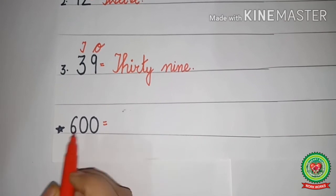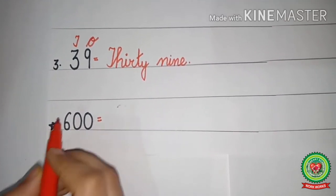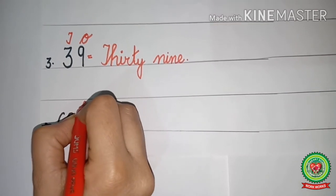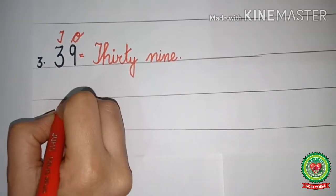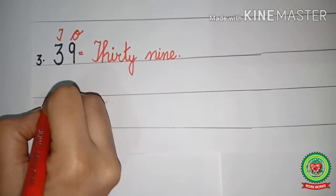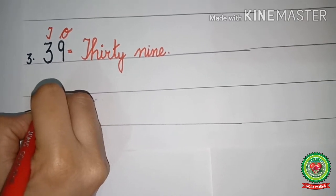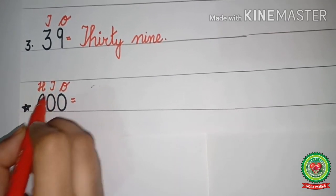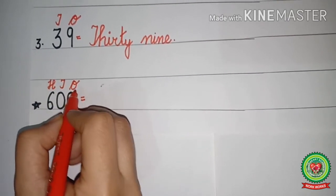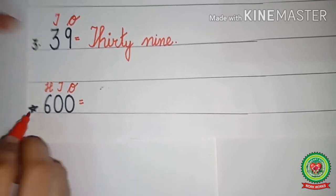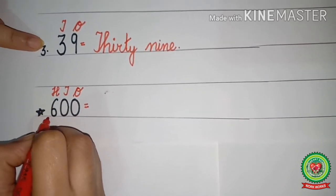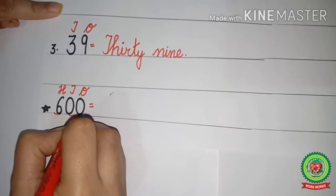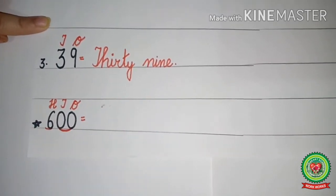Now comes the 3-digit number: 6, 0, 0. We will write the place value chart first: 1s, 10s, and 100s. What comes after 10s? 100s. Now what comes under 100? 6. Under 10s? 0. And under 1s? 0. Now it is divided into 2 parts: first part is of 100s, and another part is of 10s and 1s, and we write them together.